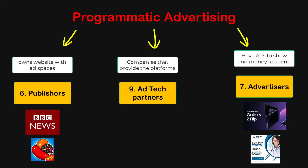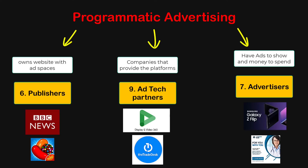After the introduction of programmatic advertising, this whole process is done through programs and online software — companies like Google, The Trade Desk, and many others. So now we understand that in a programmatic advertising ecosystem there are generally at least three parties involved: a publisher, an advertiser, and an ad tech company who provides these platforms.